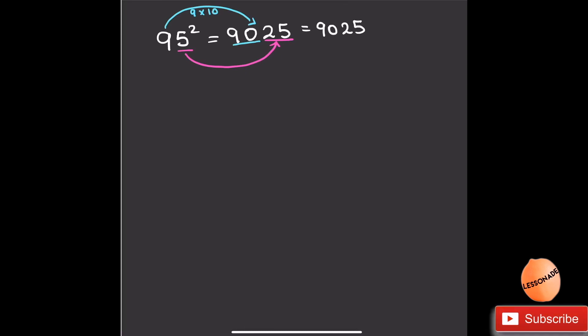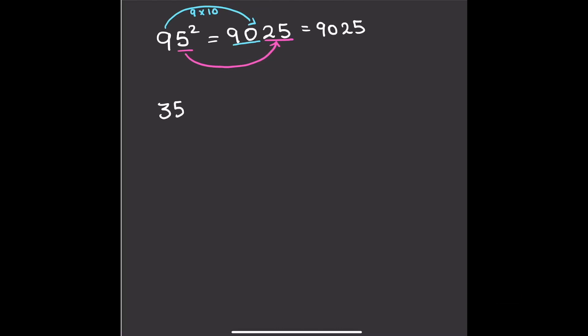Let's try some questions. 35 squared — let's do 35 squared first. With 35 squared, we're going to do the same thing again. We're going to do 5 squared first, which is going to be 25. And then we're going to times the 3 by the next highest number, which is going to be 4, so 3 times 4 is going to be 12. So the answer is 1,225. That's for 35 squared.